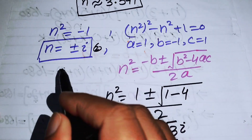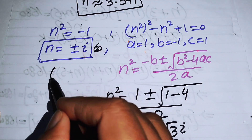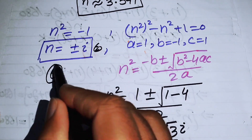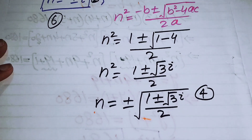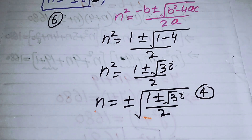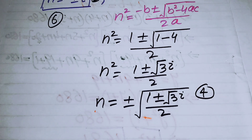So this is our final answer for this question. We have found all twelve roots of n to the power of 12 minus 1 equals 0. Thank you so much for watching this video. Please subscribe to my channel for more exciting videos.